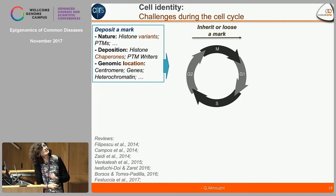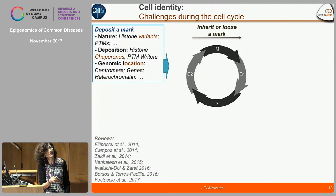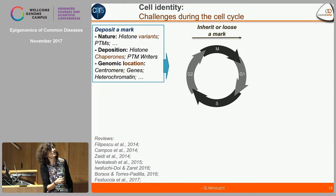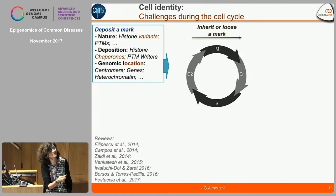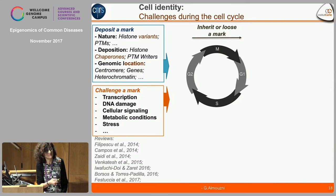Getting back to the question of cell identity and the challenges during the cell cycle: how do you inherit or lose a mark? Depositing a mark involves the nature of the mark — histone variant or post-translational modification — the deposition factors and PTM writers, and the genomic location. The challenges during the cell cycle include transcription, DNA damage, cellular signaling, metabolic conditions, and stress.